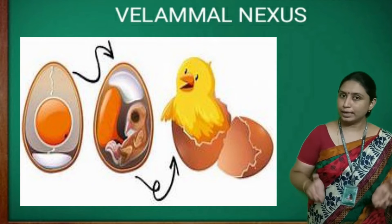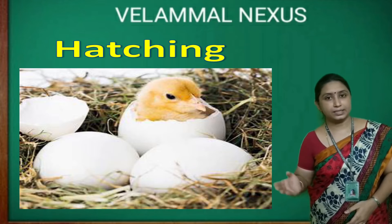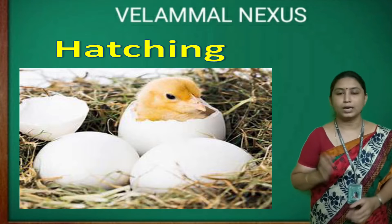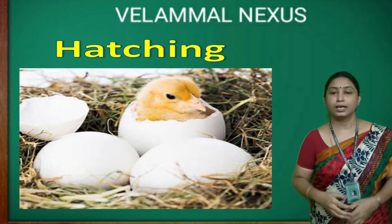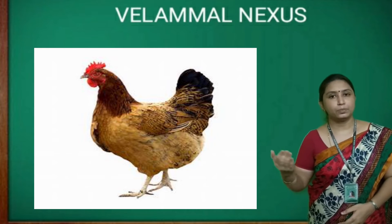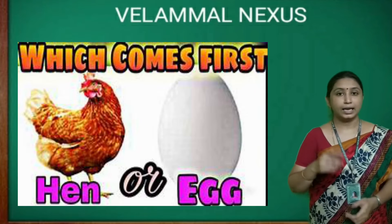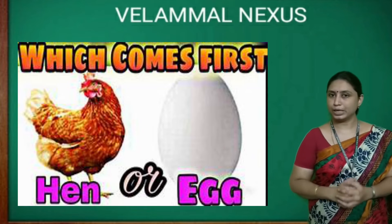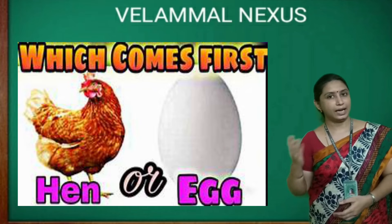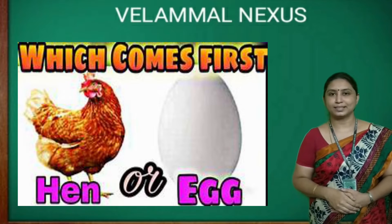A young growing chick called embryo starts developing inside each egg. Once the embryo develops into a chick, the chick breaks the shell and comes out — this is called hatching. Then the young chick grows up to become an adult hen. Children, let me ask you a question: which comes first, hen or egg? Find out the answer.